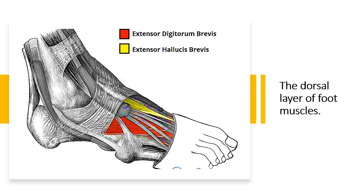Muscles acting on the foot can be divided into two distinct groups: extrinsic and intrinsic. The extrinsic muscles arise from the anterior, posterior, and lateral compartments of the leg. They are mainly responsible for actions such as eversion, inversion, plantar flexion, and dorsiflexion at the ankle joint and subtalar joint. The intrinsic muscles are located within the foot and are responsible for fine motor actions, for example movement of the individual digits.